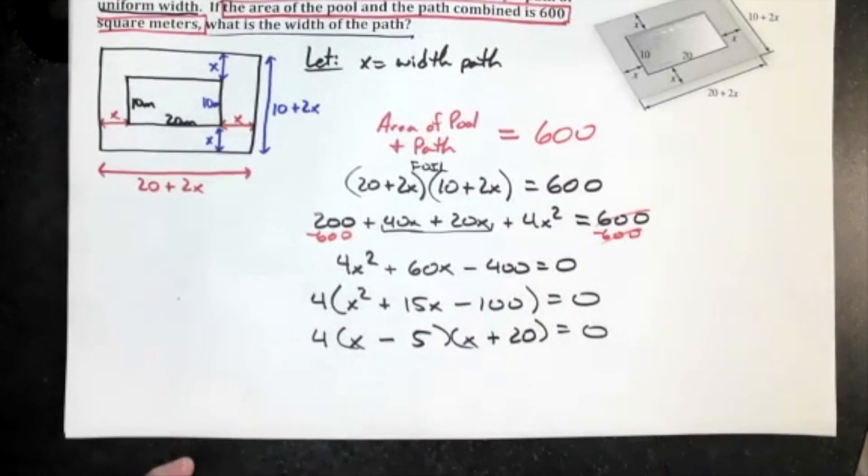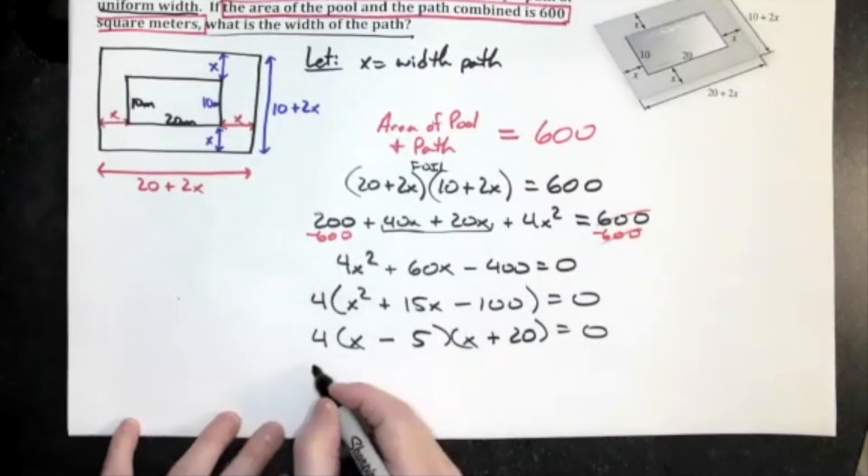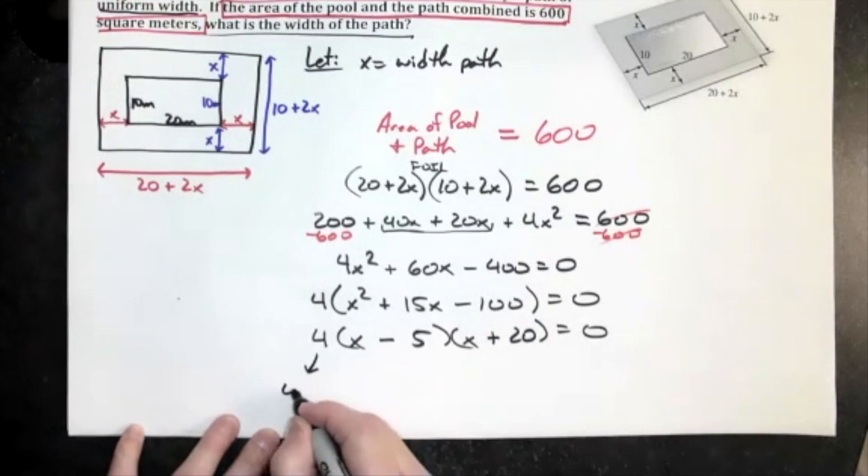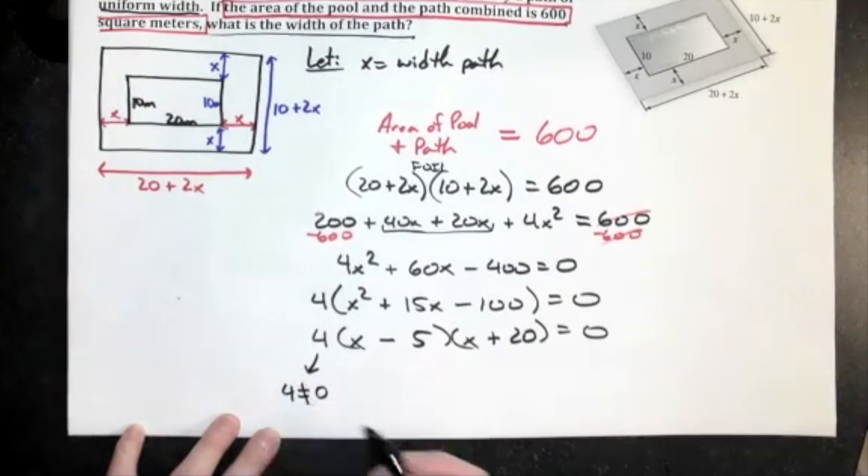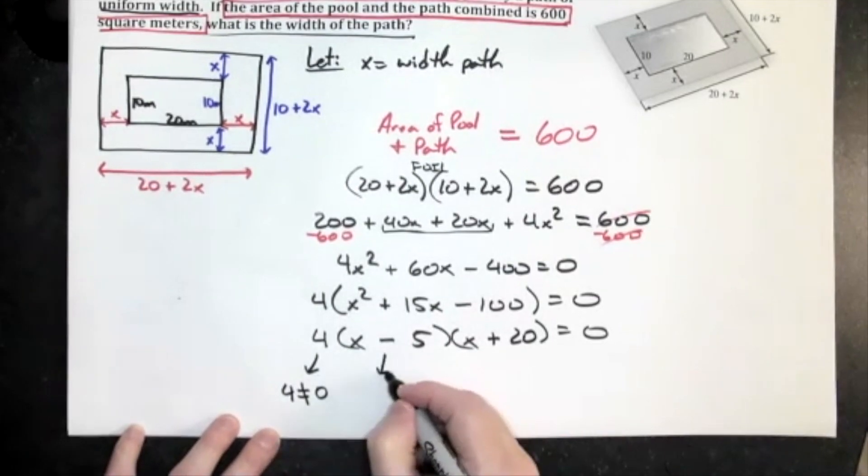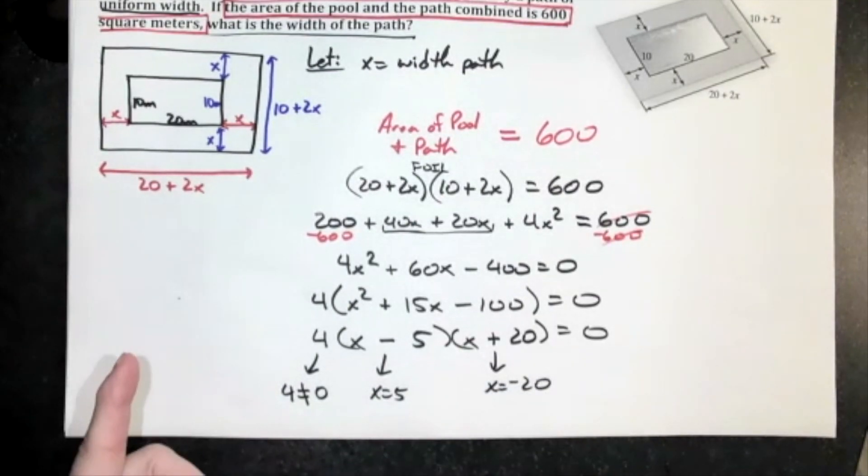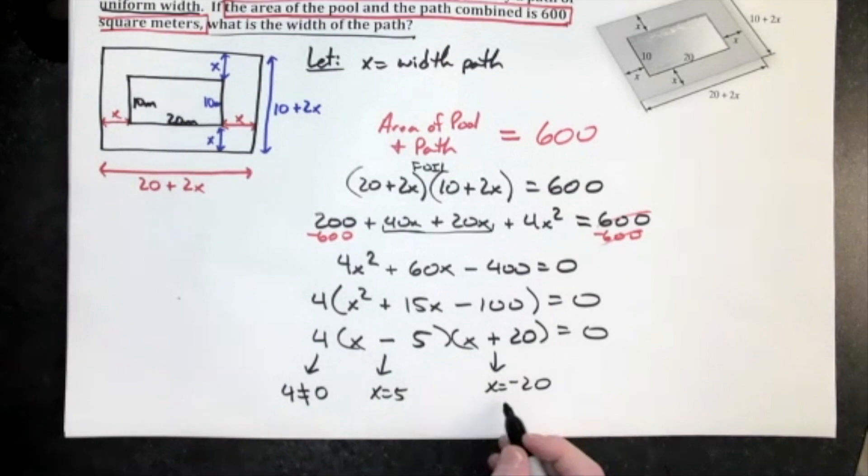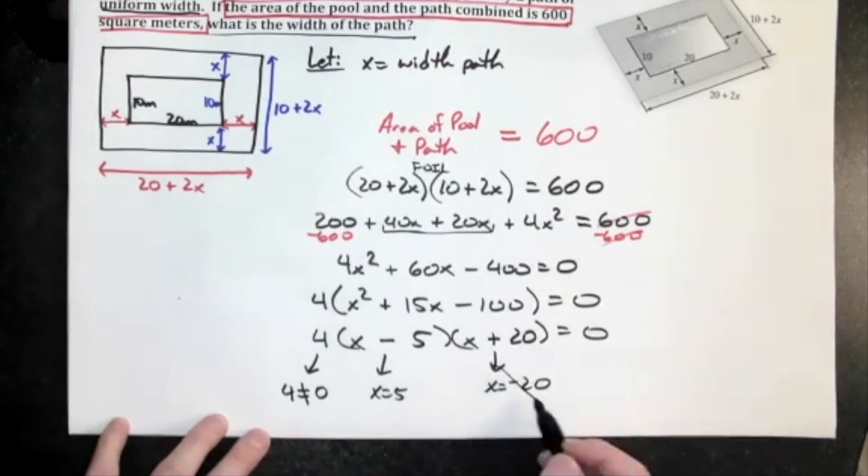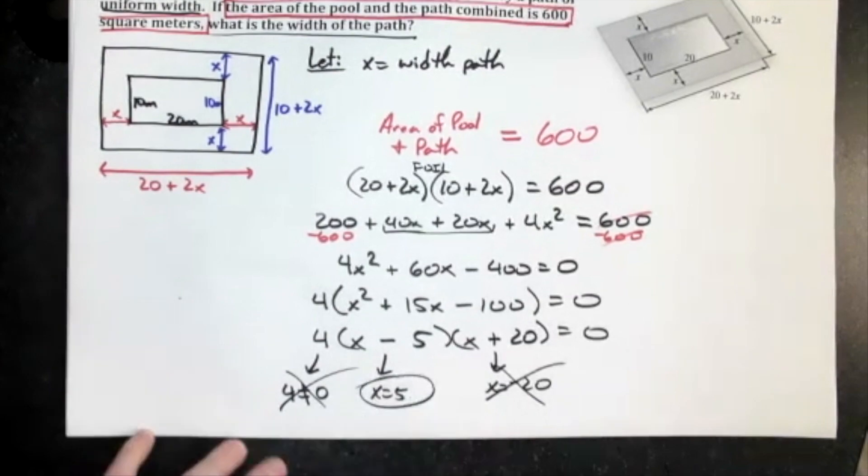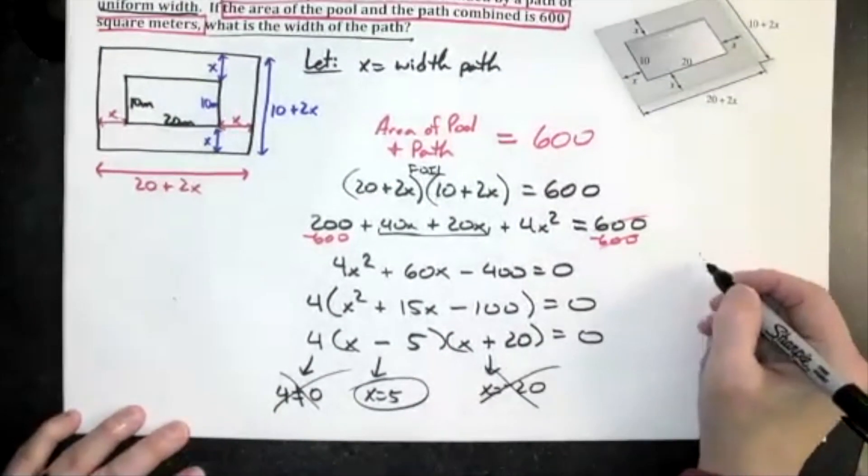And then again we set everything equal to zero, but here is a plain number, so again we've got that plain number being set equal to zero, which we know is a false statement, gives us nothing. This gives me x equals 5, this one gives me x equals negative 20. I'm wanting a width, widths can't be negative, so again we're throwing this one out, which leaves us with this one. I guess this one is in meters as well. So then the width of the path is going to be 5 meters.